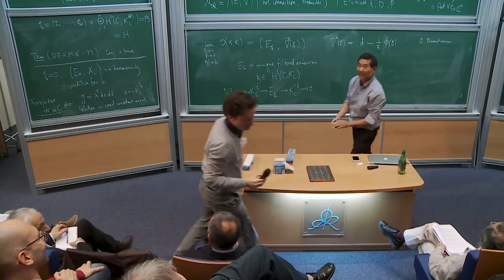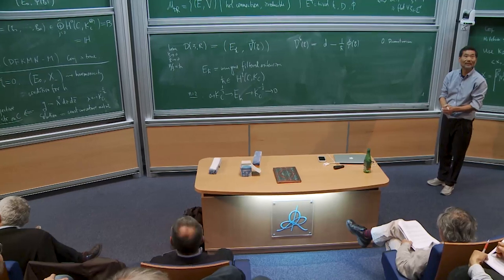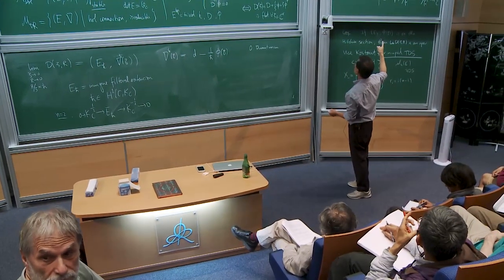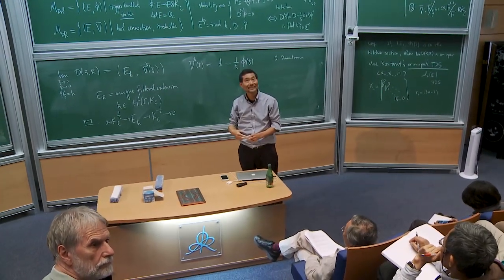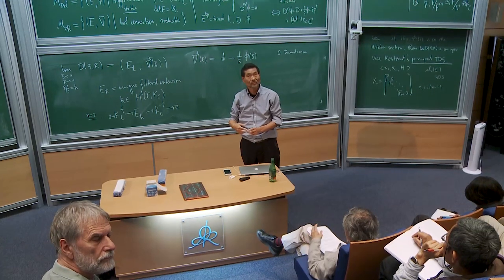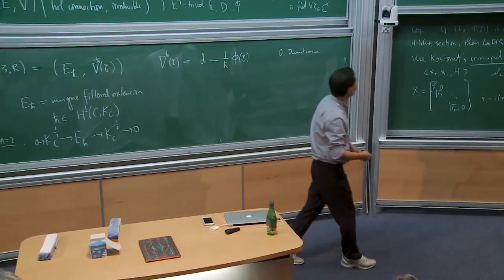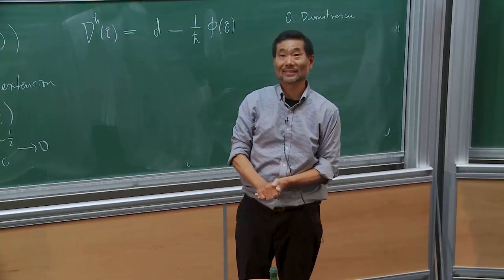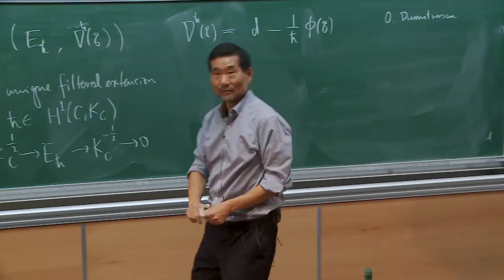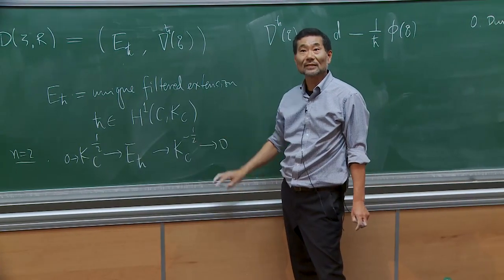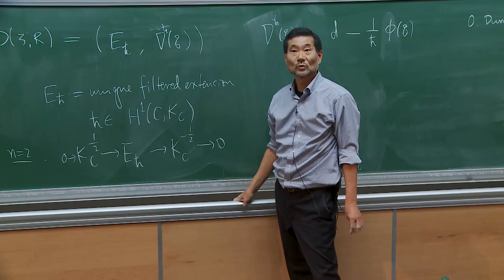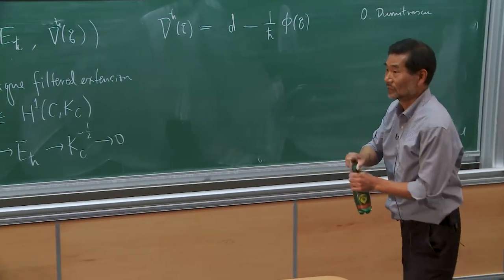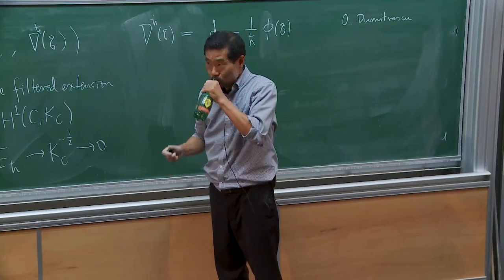Question: When you say the limit exists and is an oper, does it mean the filtration in the definition of an oper exists? Is it uniquely defined or part of the data? Speaker: The filtration is constructed. There is a theorem that if such a filtration exists satisfying all conditions, it is unique. Oper is a property, not a structure: if you have a connection, being an oper is a property. The proof of the theorem does contain the actual construction of the filtration.